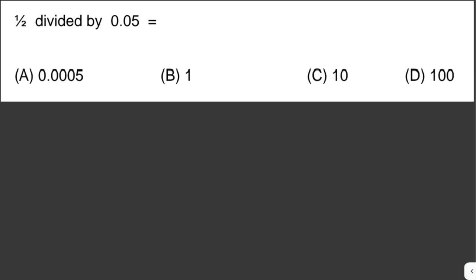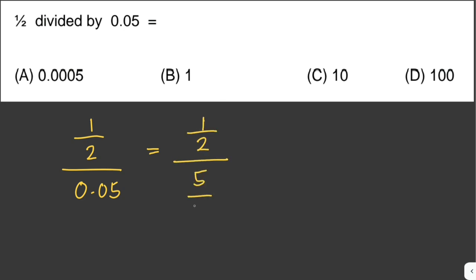Next problem: 1/2 divided by 0.05. We can write 0.05 as 5 over 100, so this becomes 1/2 over 5/100.